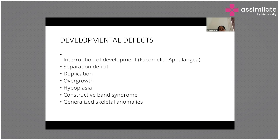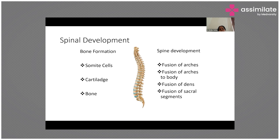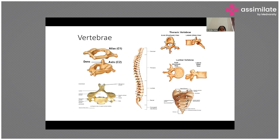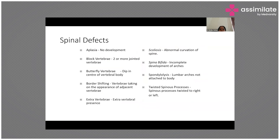Now coming to how the spine is developed: bone formation happens from somite cells, cartilage and bone. In spine development, there is fusion of the arches to form the body, fusion of the dens, and fusion of sacral segments. These form the vertebrae. If this process is interrupted at any time, you will have these developmental defects.